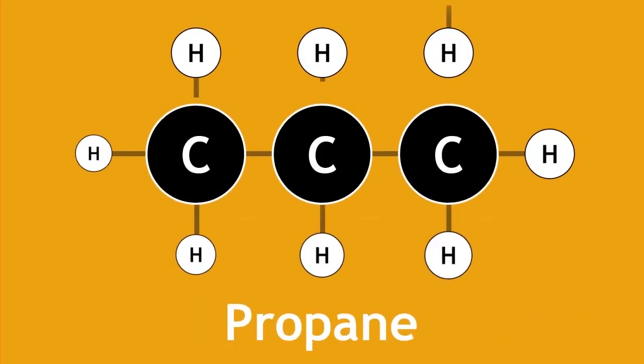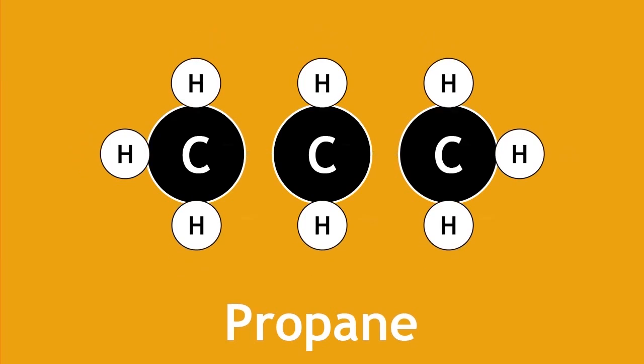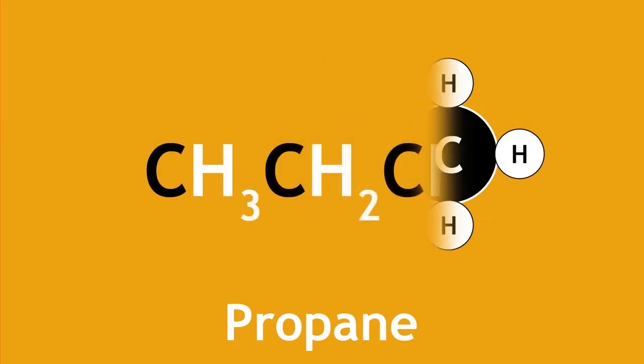Here is another example. First, the displayed formula of propane. If we then take out the lines representing the covalent bonds and group our atoms together in order they are arranged, we make the structural formula of propane.